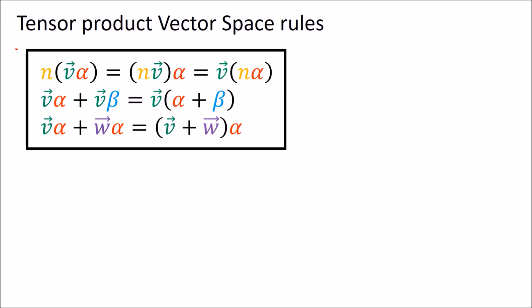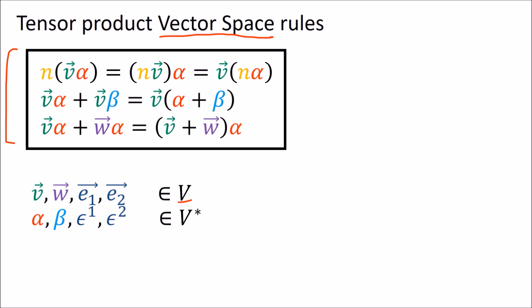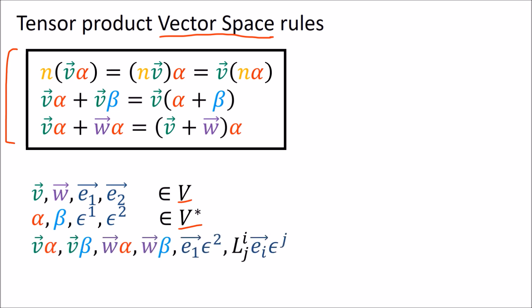We've come up with scaling and adding rules, and if we can scale and we can add, that means we have a vector space. We know that vectors v, w, e1, and e2 live in the vector space V, and covectors like alpha, beta, epsilon 1, and epsilon 2 live in V*. We can make vector-covector pairs like v·alpha, v·beta, w·alpha, and so on, and we can add and scale them using the rules we just talked about. So these must be vectors in some vector space.